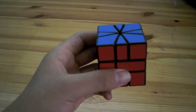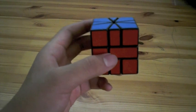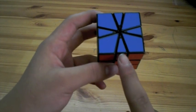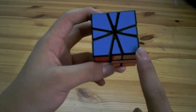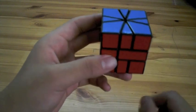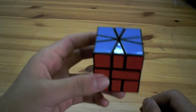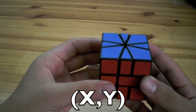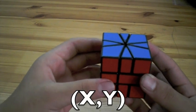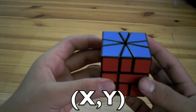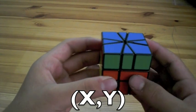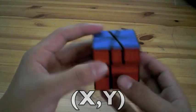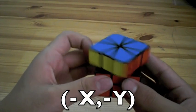The next step of solving the Square-1 requires that you know the algorithm notation. The first thing you have to know is that edges are worth one and corners are worth two. So for one move, we have two numbers separated by commas in parentheses. The first number refers to the number of turns for the top layer, and the second number refers to the bottom layer. If you see a negative in front of the number, it means to turn counterclockwise.